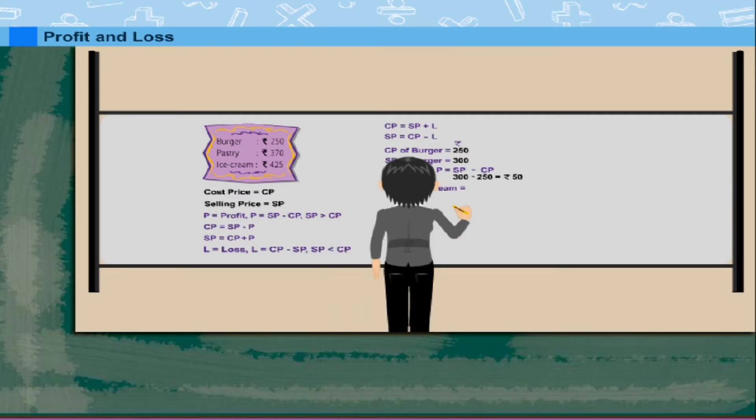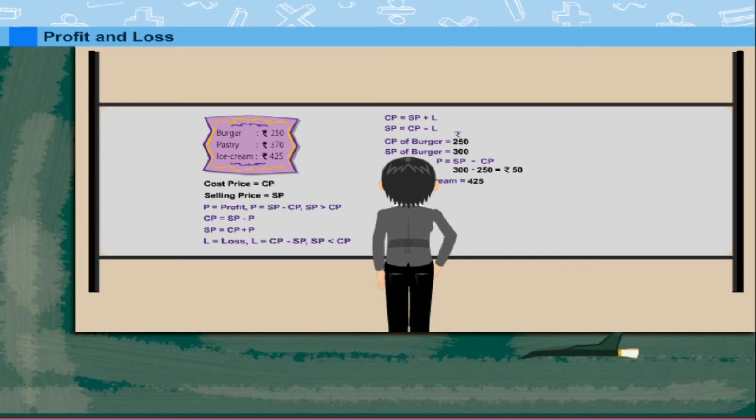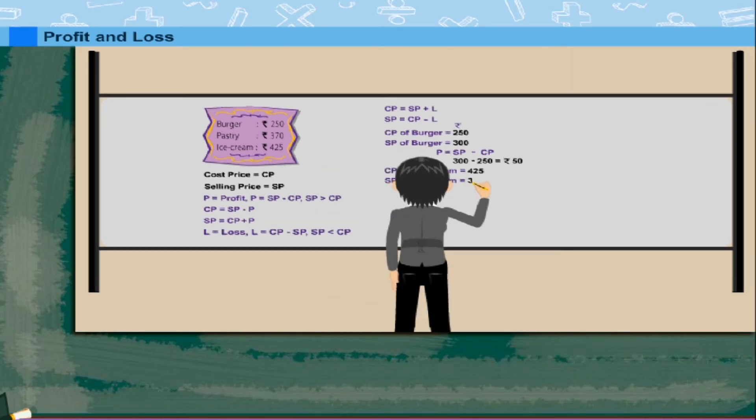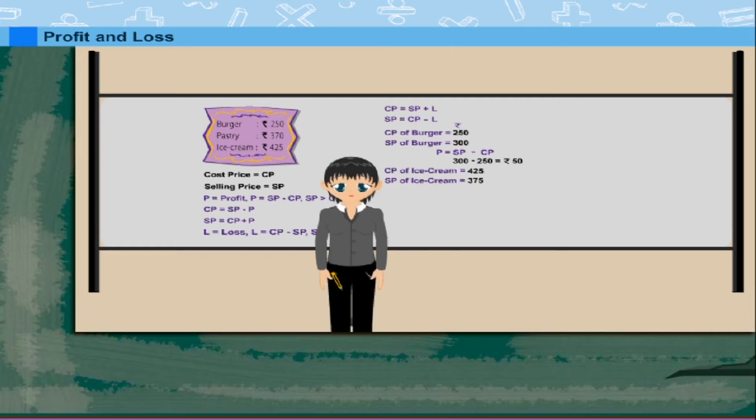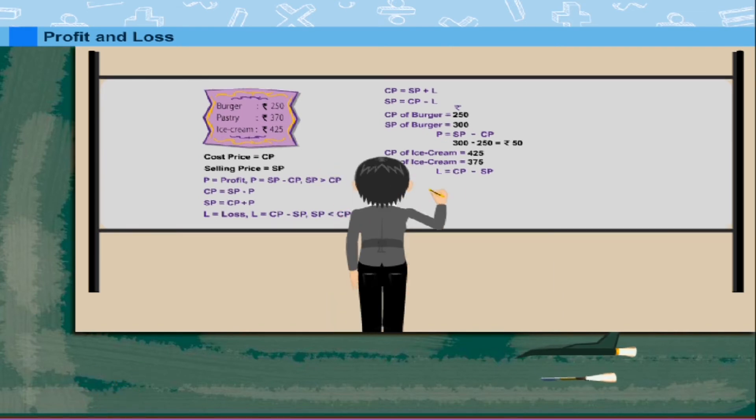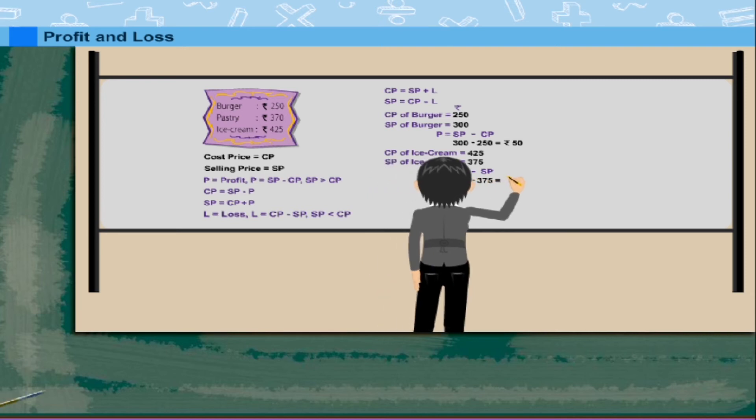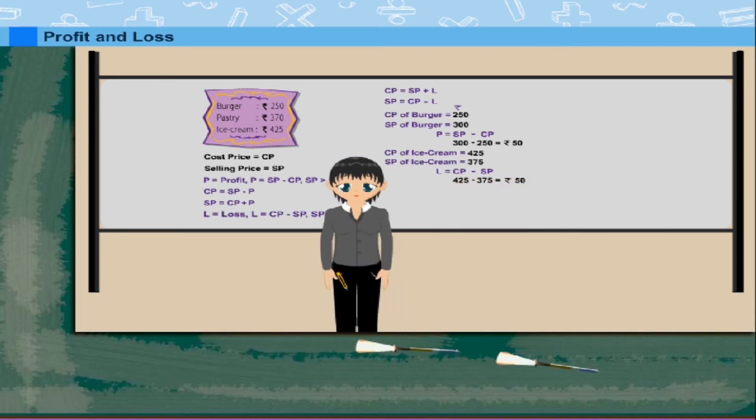CP of ice cream is Rs.425 and SP is Rs.375. CP is greater than SP. So, the loss is Rs.425 minus Rs.375 equals Rs.50.